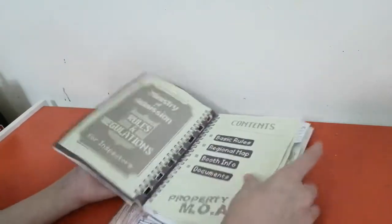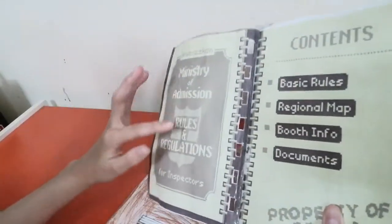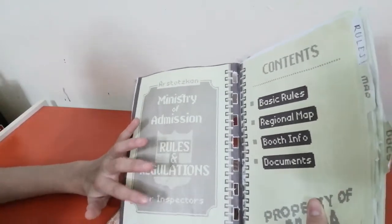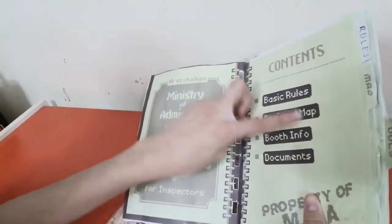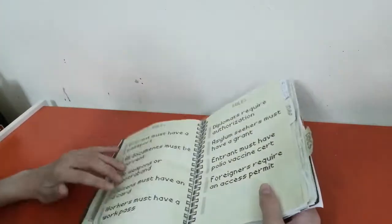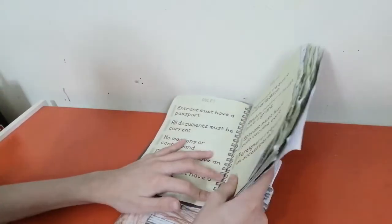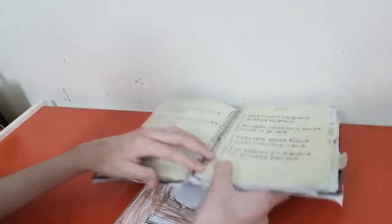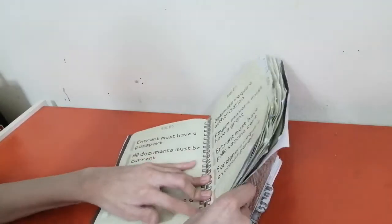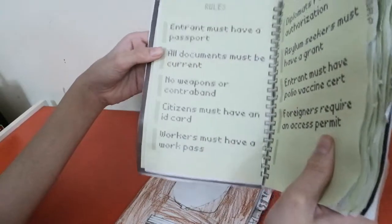Here is the inside. Ministry of Admission rules and regulations for inspectors. Here's the content tab. He didn't include the confiscation tab, which is a little bit sad. Here are all the rules.